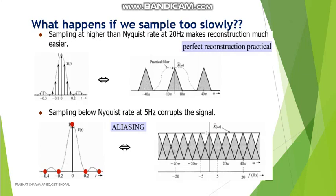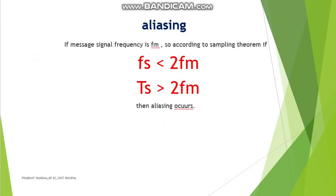What happens if we sample too slowly? In a second condition, we take a sampling rate corresponding to 20 kilohertz, which is greater than twice fm, so we get a perfect reconstruction practically. But if we take a sampling frequency of only 5 kilohertz — less than twice fm — we get an aliased signal where the signal overlaps with the neighboring signal. This is the condition of aliasing. To avoid aliasing, we always take fs greater than twice fm.